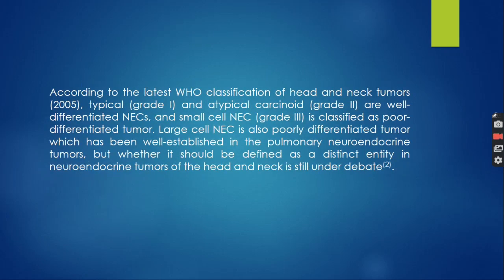According to the latest WHO classification of head and neck tumours, typical and atypical carcinoma are well-differentiated neuroendocrine cancers, and small cell neuroendocrine cancer is classified as a poorly differentiated tumour. Large cell neuroendocrine cancer is also a poorly differentiated tumour which has been well established in the pulmonary neuroendocrine tumours, but whether it should be defined as a distinct entity in neuroendocrine tumours of head and neck is still under debate.